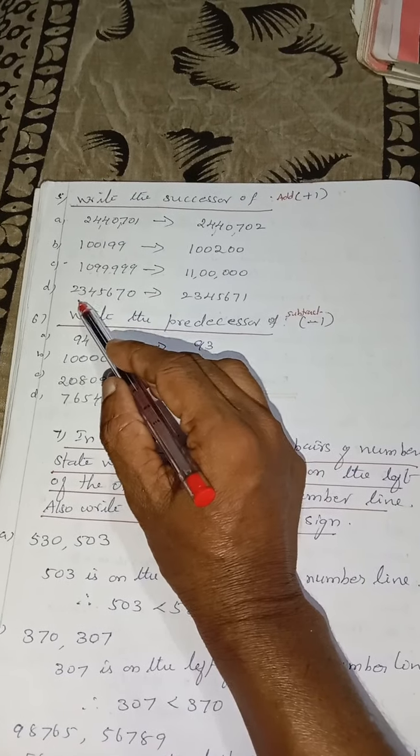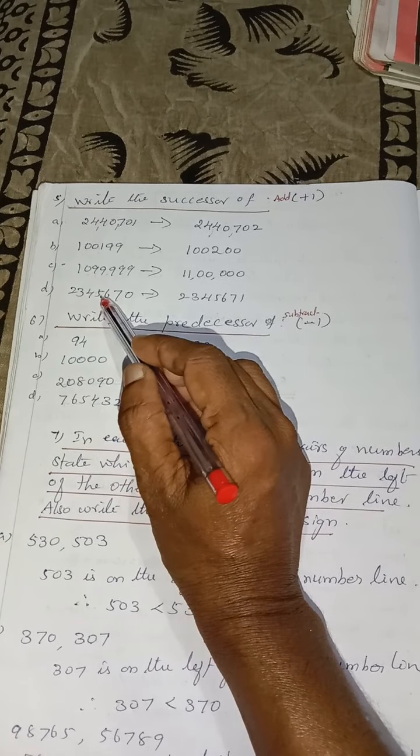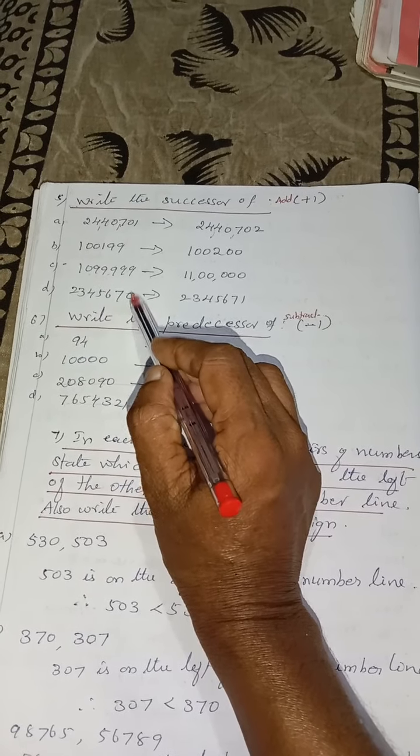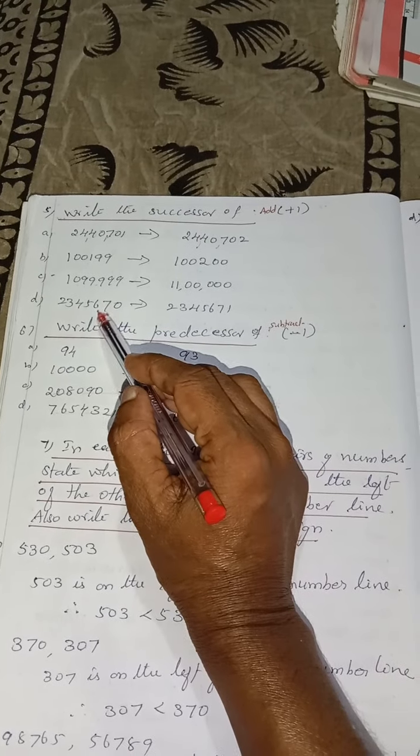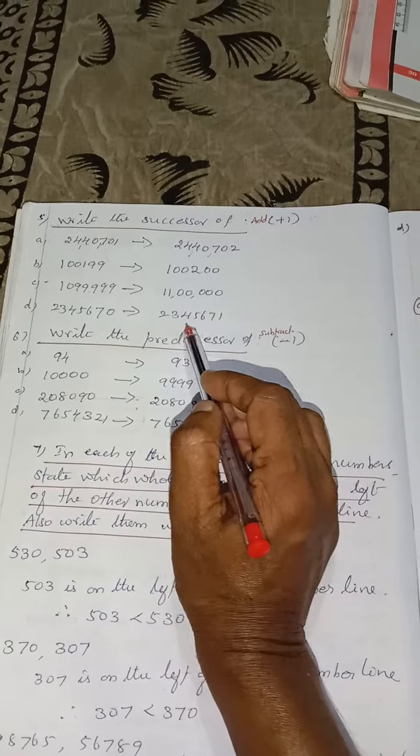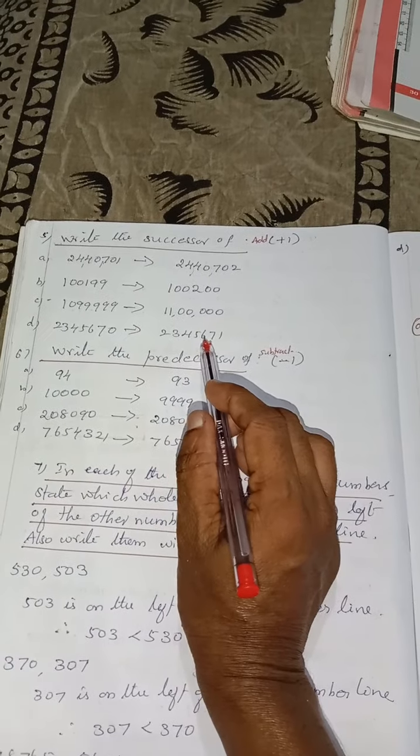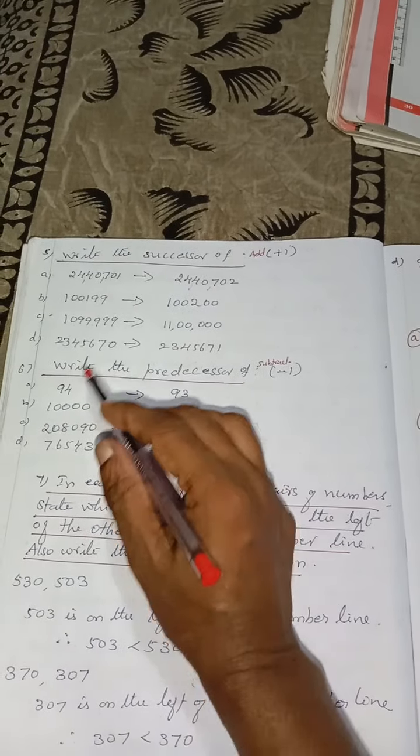Next, 23,45,670. What is the successor? Successor is next number. So we will be getting 671. I hope you understood this. Thanks for watching. Next video we can see the continuation.